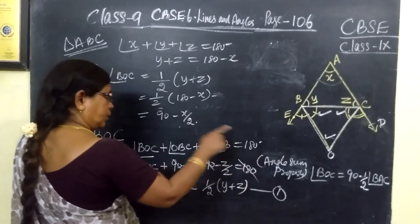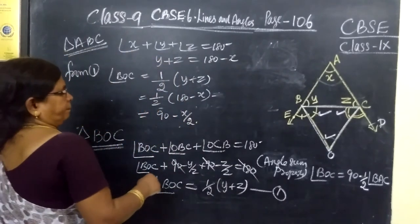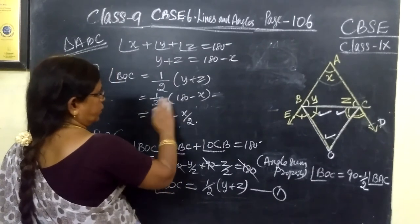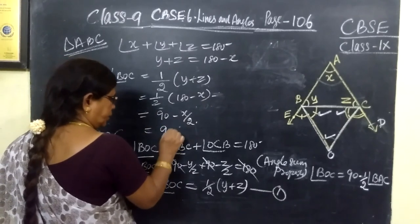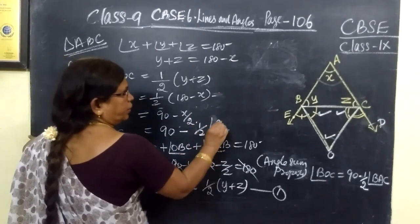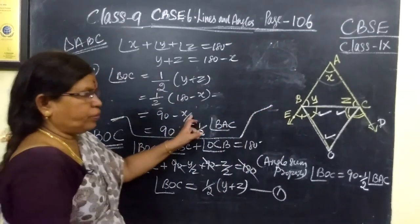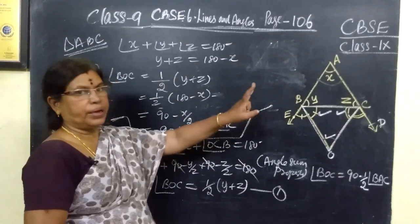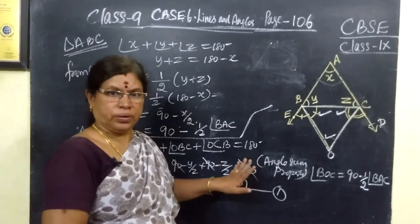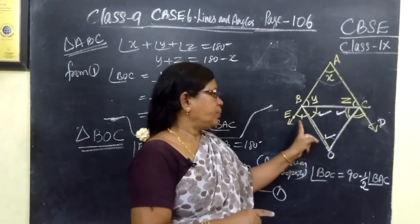This is nothing but X by 2 is nothing but BAC. You can write it as 90 minus half of, what is X? X is nothing but angle BAC. So that's all. X by 2 we write, half of X is BAC. So in this problem we have used sum of three angles is 180 degree and for angle bisector, means these two angles are equal.